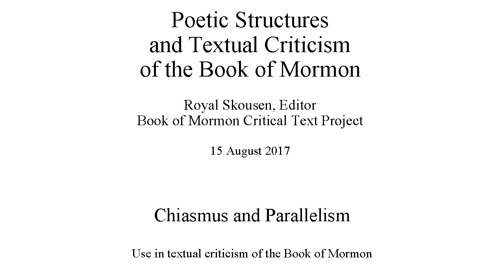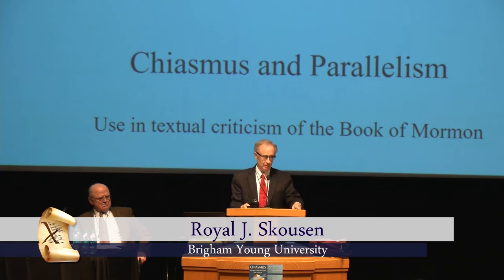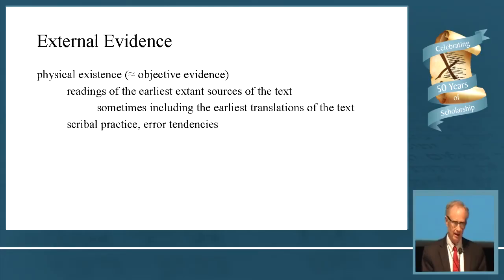I'm going to talk about poetic structures and textual criticism in the Book of Mormon, particularly chiasmus and parallelism. At the beginning, I'll give an example dealing with conjecture in the text that brings up the idea that there are two kinds of evidence when you make an argument for a reading. One is external evidence, which is the physical evidence. There's a manuscript out there, scribal practice, actual errors you can look at. These things are really the heart of making changes and conjectures to the text.